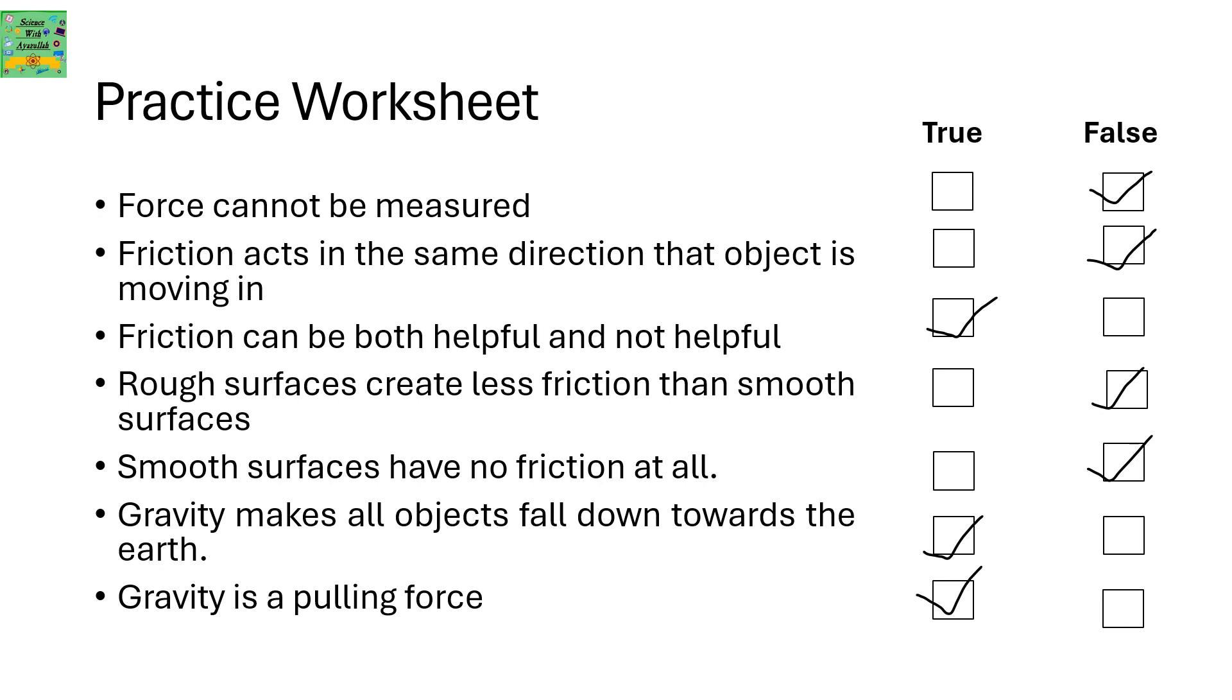Smooth surfaces have no friction at all - false. Gravity makes all objects fall down towards the earth - true. Gravity is a pulling force - that's also true.